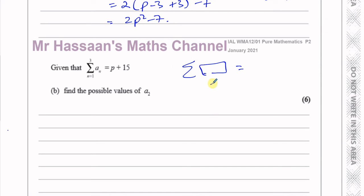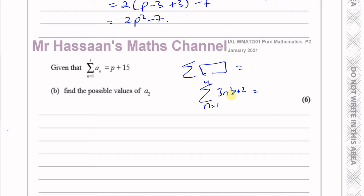For example, if you have the sum from n equals 1 to 4 of (3n squared plus 2), that means you place n equals 1, 2, 3, 4 into the formula and add the answers together. So you'd get: 3(1²)+2, plus 3(2²)+2, plus 3(3²)+2, plus 3(4²)+2, all added together.